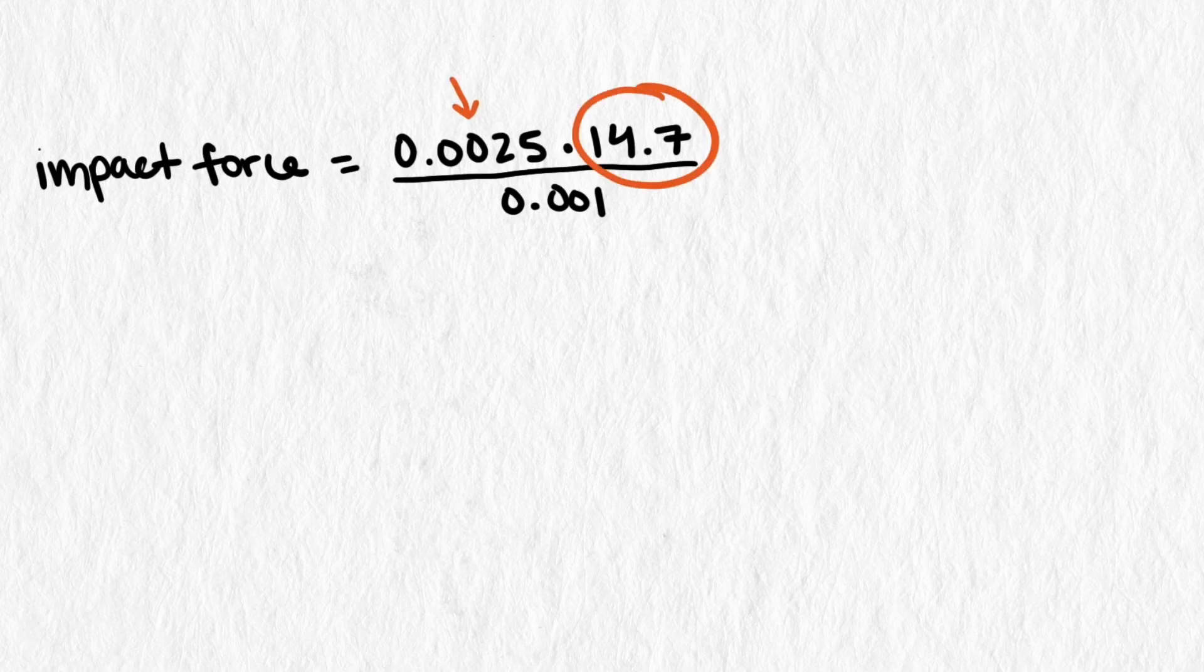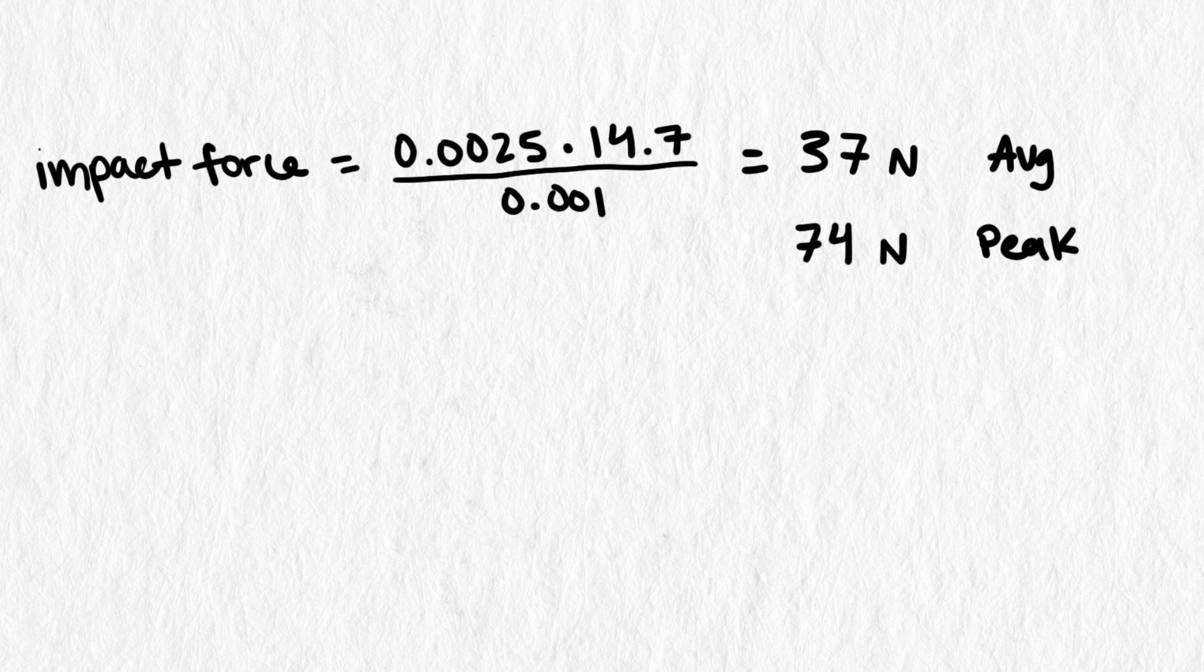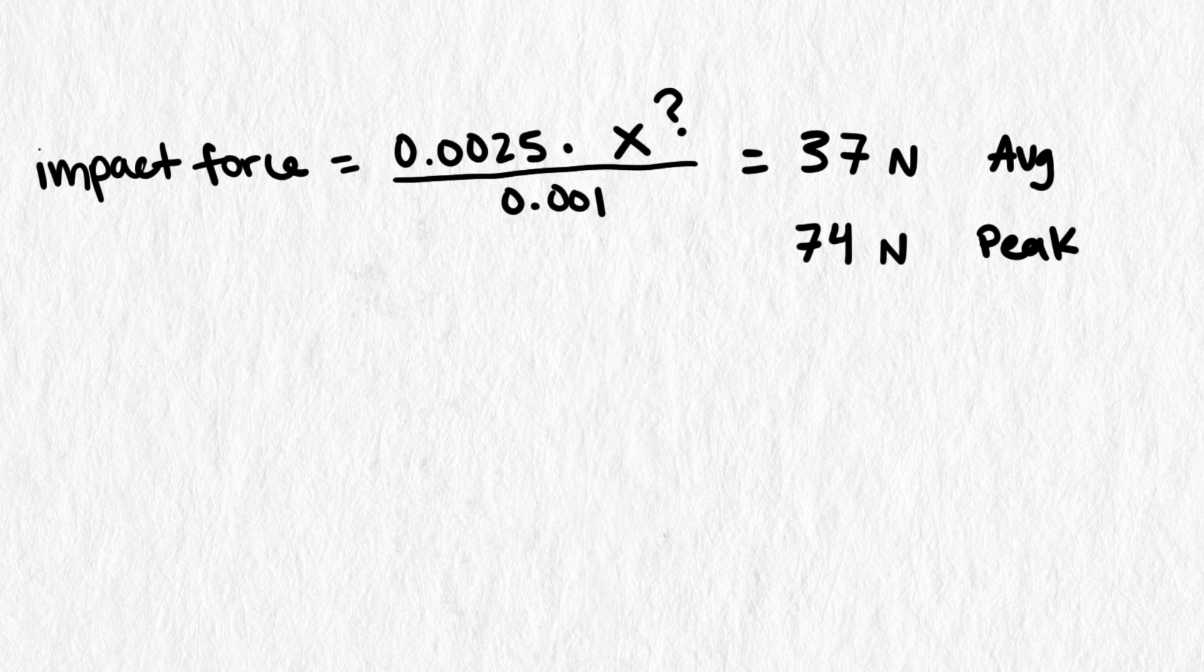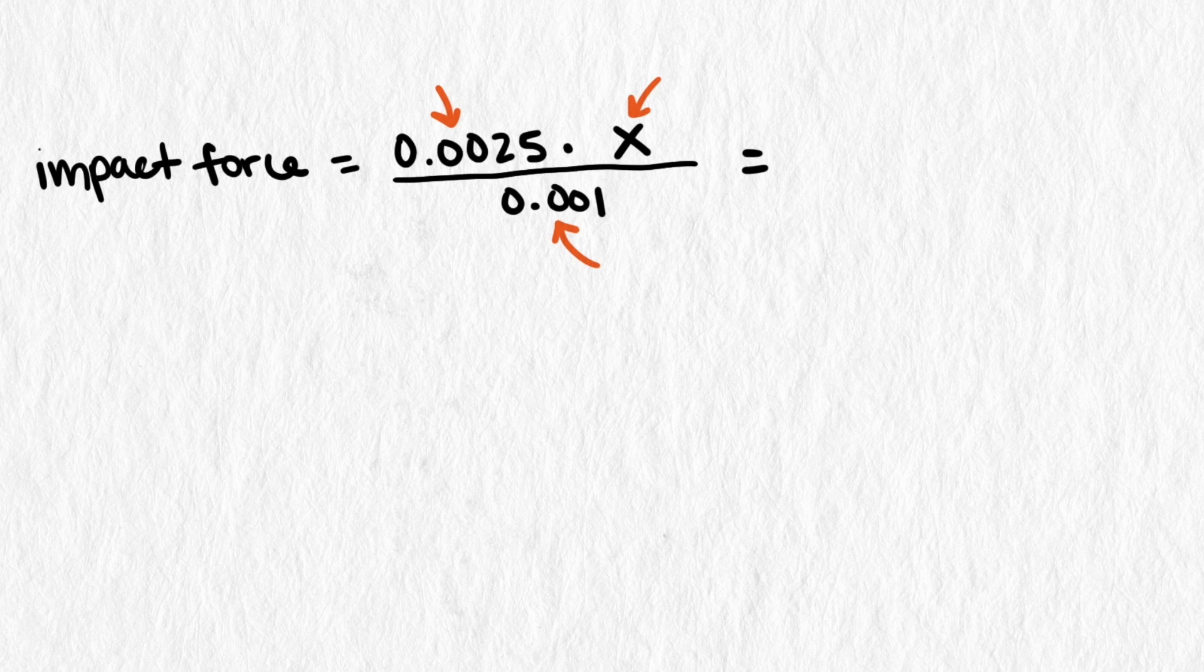What if instead of changing mass, we could change velocity? Our tumbling penny generated 74 newtons of peak impact force. How much force would the penny generate if it didn't tumble while it fell? What if it fell on its edge all the way down? Having the penny fall on its edge will change our penny's velocity, but the mass and contact time will stay the same.